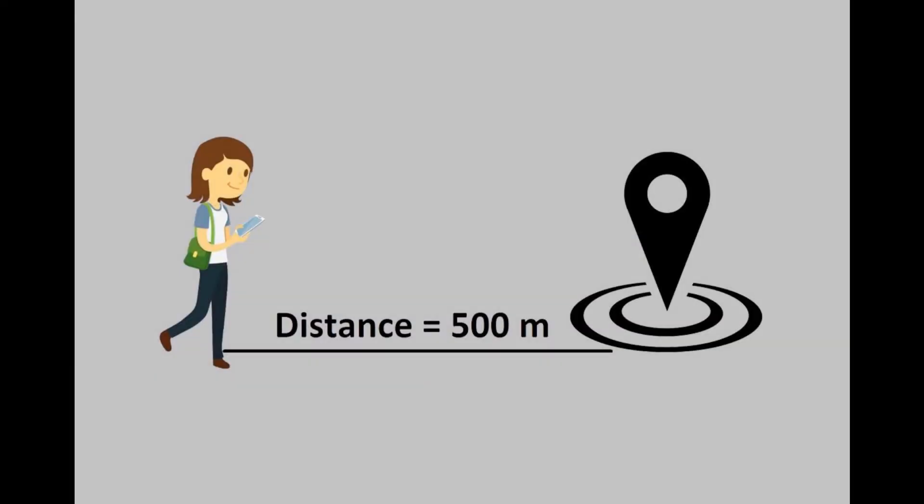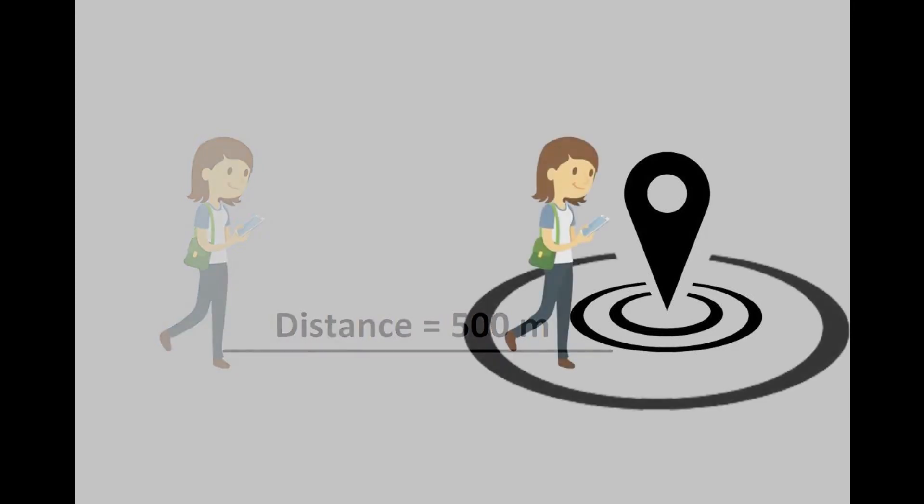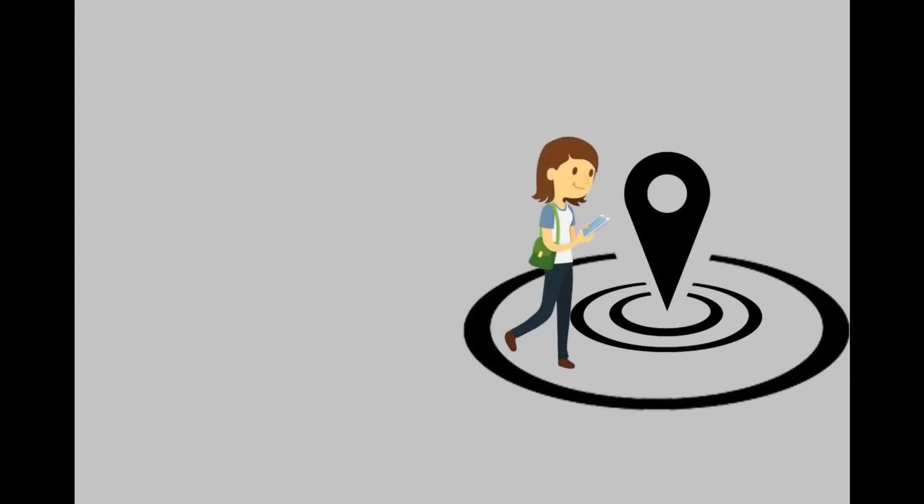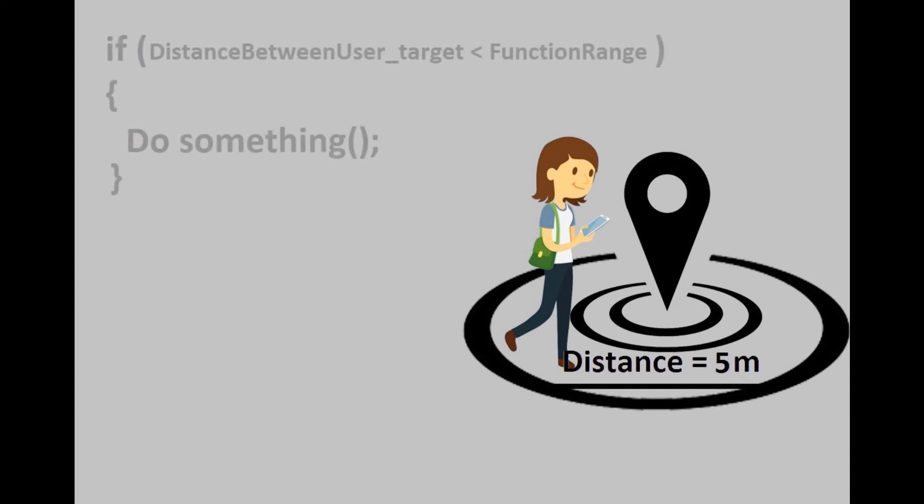The appropriate solution is to use a comparison of the distance between the phone and the target. This means that our function will be executed when the phone reaches a distance of 5 meters from the target coordinates.